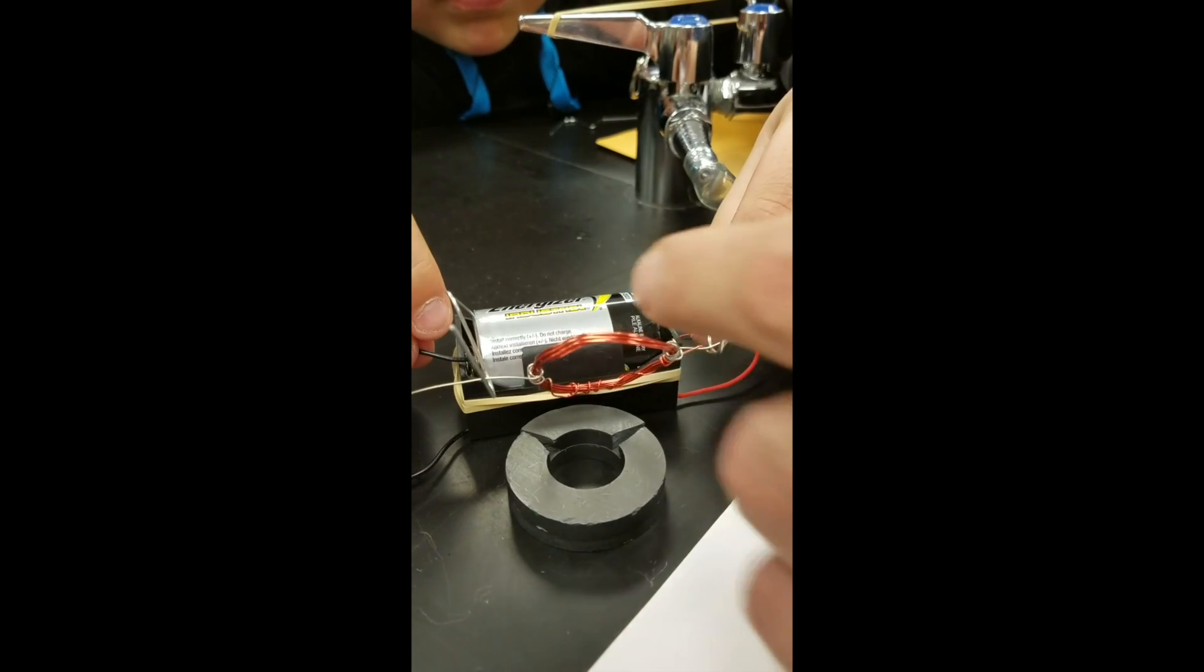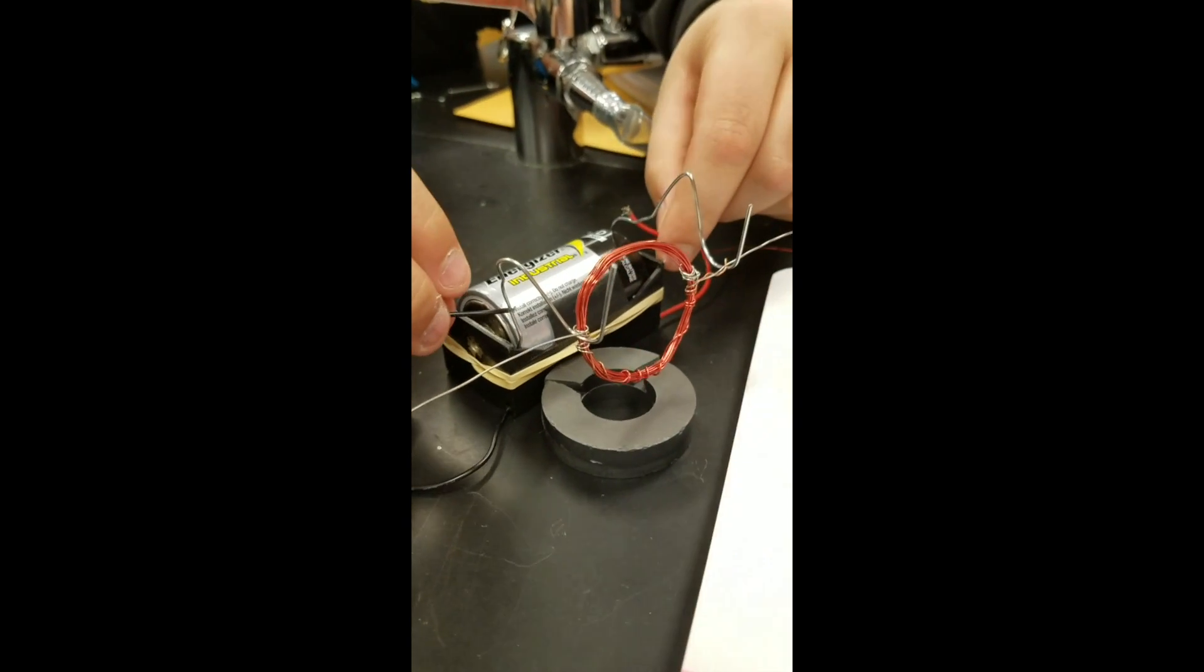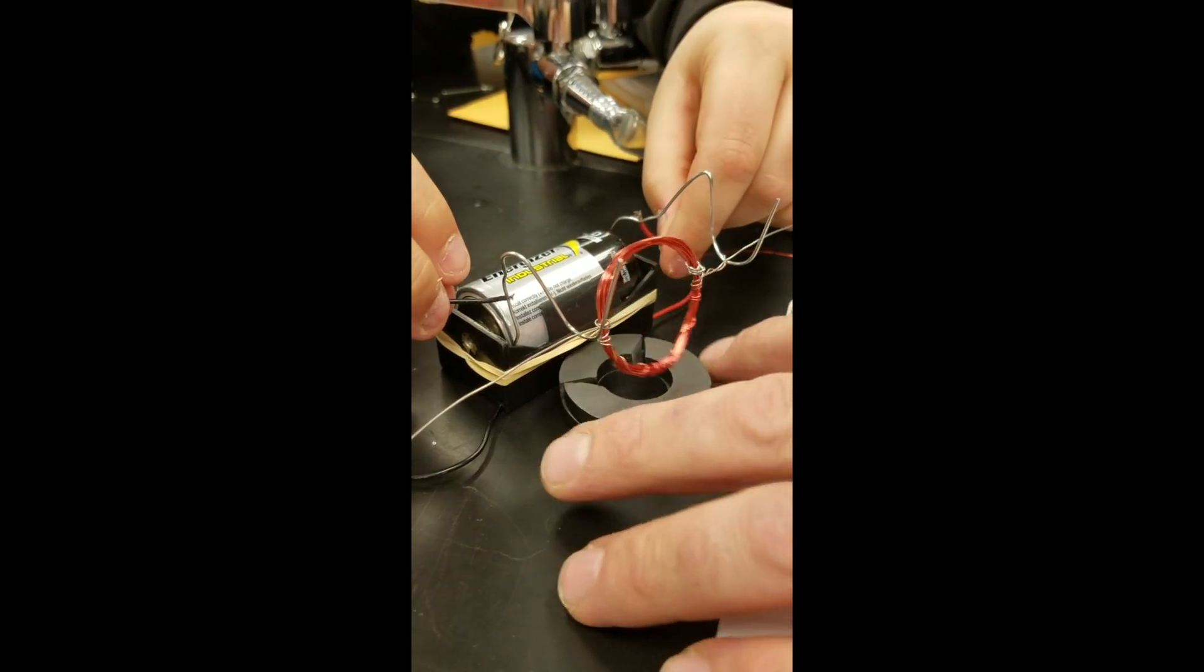This motor works by charging the metal circle commutator with electricity and the magnet then repels the magnet, causing the circle to move.